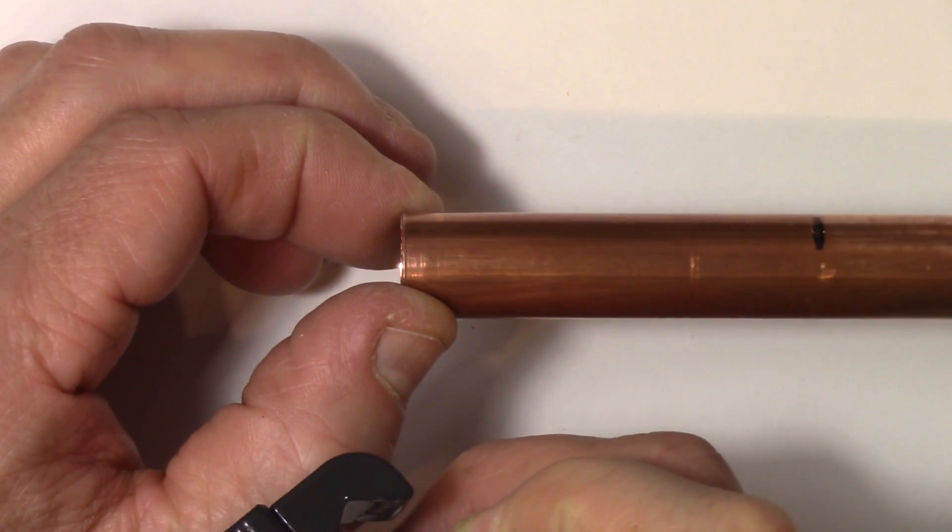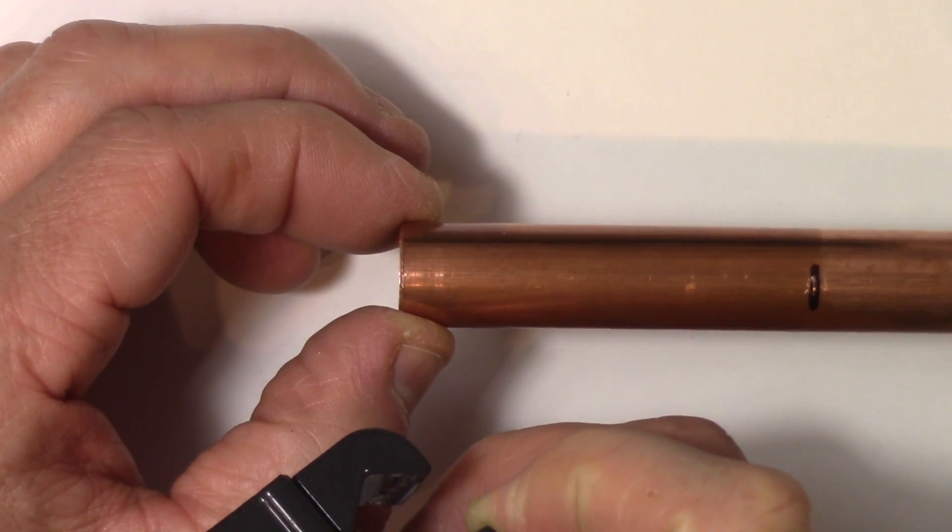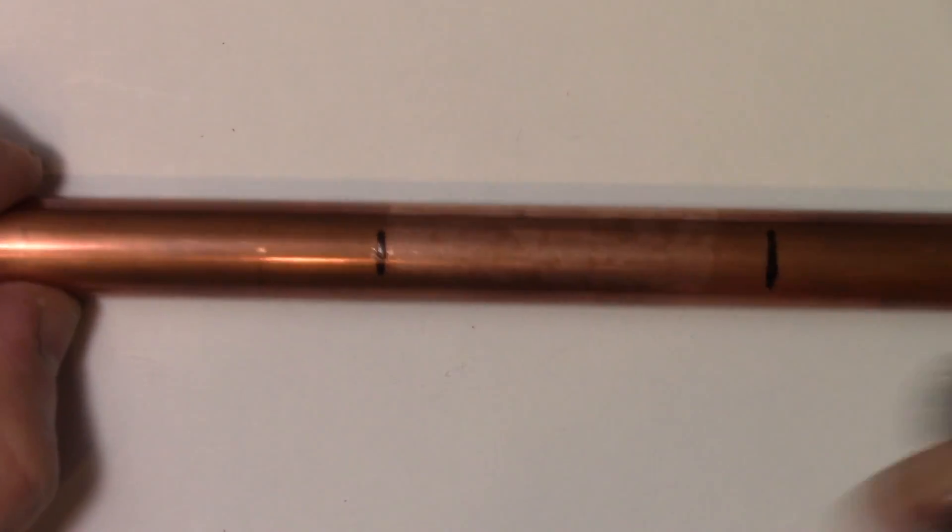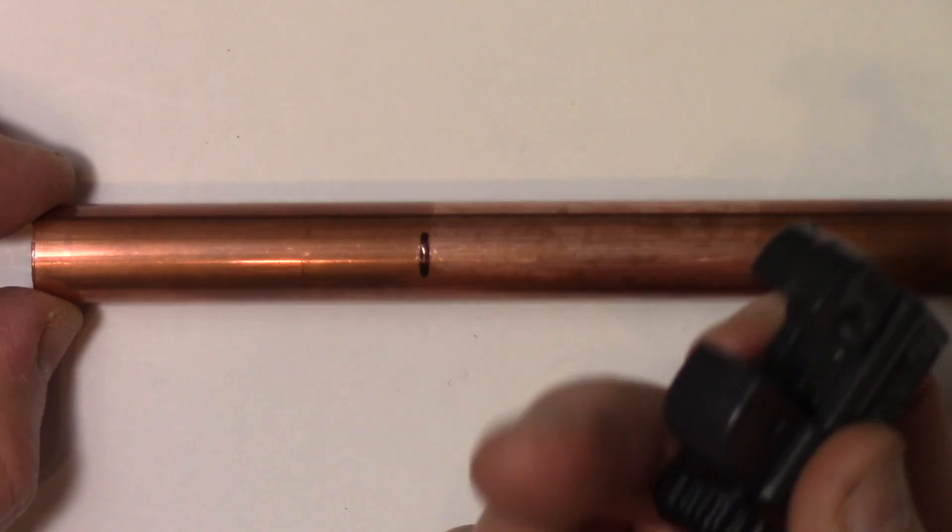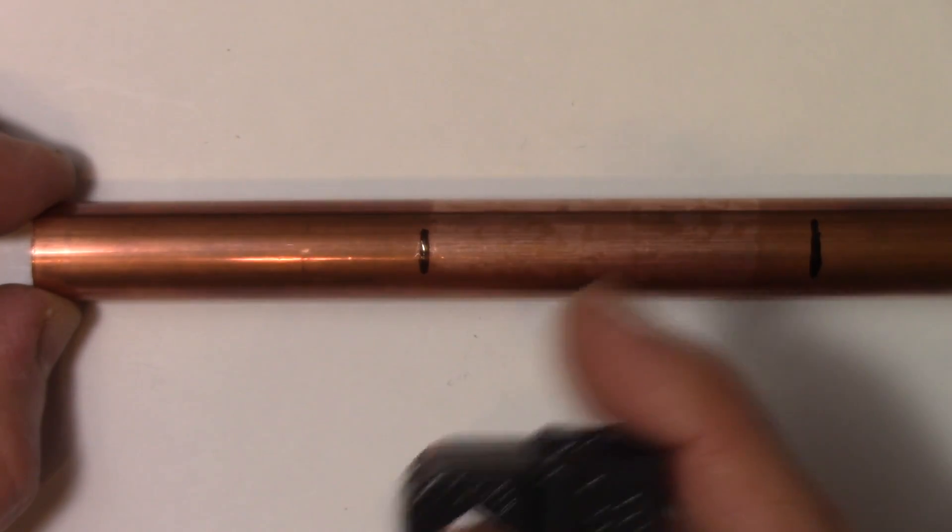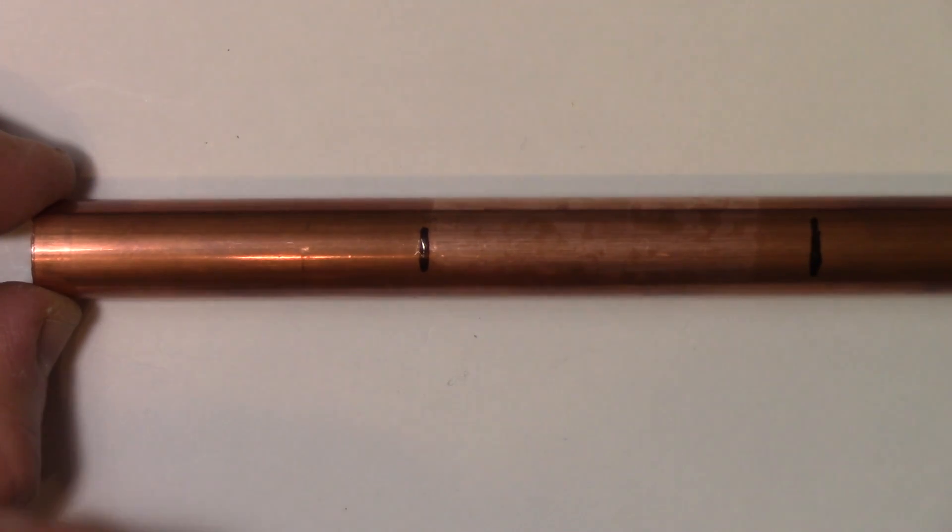I've got the pipe marked out where I want to cut it here and here to the exact measurements. I'm going to use a pipe cutter to cut through the pipe because it does a really nice clean job as you can see here, the edge here. This has been cut with a pipe cutter and it's really nice and clean.